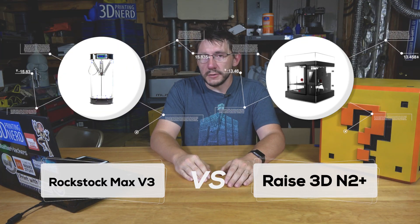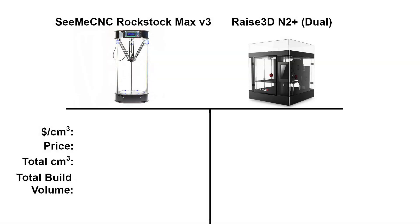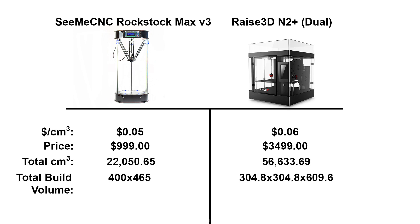Now we can compare printer types — a delta printer versus a Cartesian printer. The SeeMeCNC Rostock Max v3 has a nickel for price per cubic centimeter, whereas the Raise3D N2 Plus is just a penny more at six cents per cubic centimeter. The N2 Plus is $2,500 more than the Rostock Max v3 — that's three times the price. But the N2 Plus build volume is 34,600 cubic centimeters larger than the Rostock.